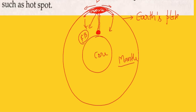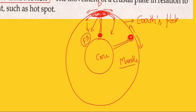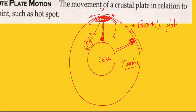The plate started moving with respect to a particular hot region — that is the flood basalt, or maybe a region with very hot basalt — which is also known as a hot spot. With respect to the hot spot, the plate started moving in different directions, and that is known as plate motion.